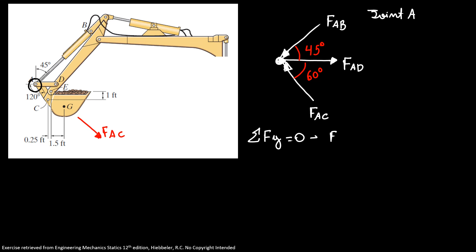So we have force AC sine of 60 degrees minus FAB sine of 45 degrees is equal to zero. So our force AB is equal to force AC sine of 60 degrees over sine of 45 degrees. So our force AB is equal to 3,076.8 pounds. So here, our force AB.